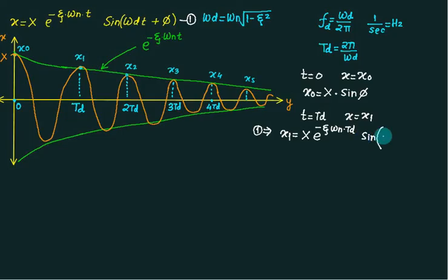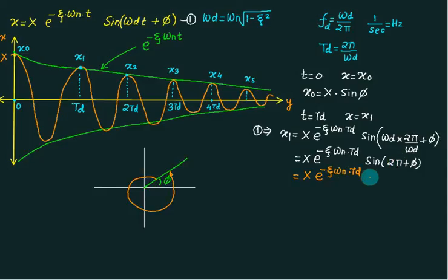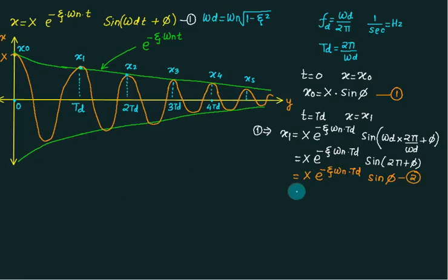Substituting td equals 2 pi divided by omega d into the sine term gives sine of omega d times td plus phi, which is sine of 2 pi plus phi. This equals sine phi. So x1 equals capital X times e to the power minus zeta omega n times td, multiplied by sine phi. This is equation number 1. This is equation number 2 with t equals 2td.